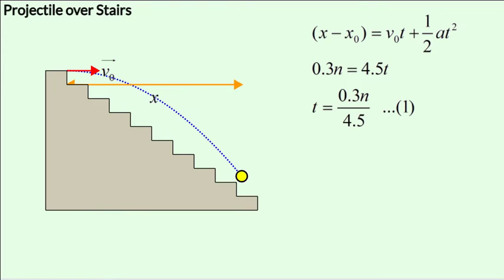Let us begin by analyzing the motion along the x-axis. We apply the second equation of motion along the x-axis: x minus x0 equals v0t plus half at squared. Now, the initial x-displacement x0 is 0. And the final x-displacement is 0.3 times n since we are considering that it has struck the nth step and each step has a uniform width of 0.3 meters. The range of the projectile along the x-axis will be 0.3 times n. The initial x velocity is v0 and that is given to us as 4.5 meters per second. And the acceleration along the x-axis is 0.